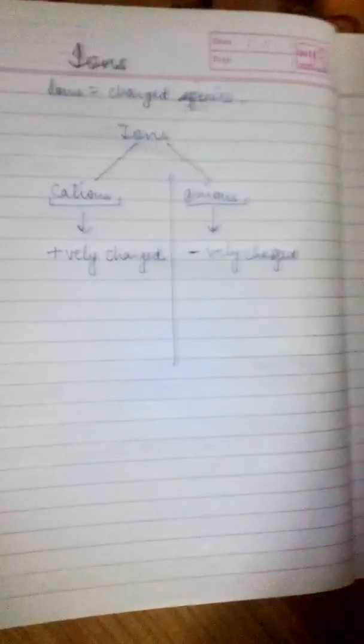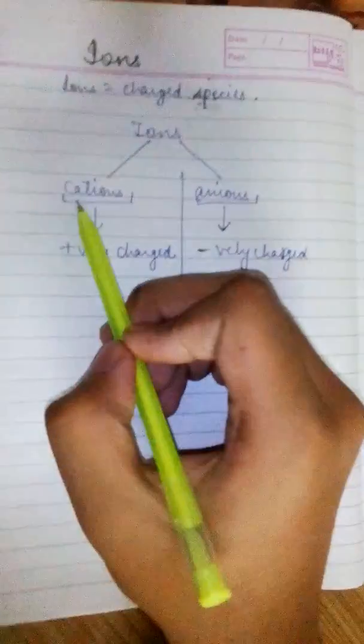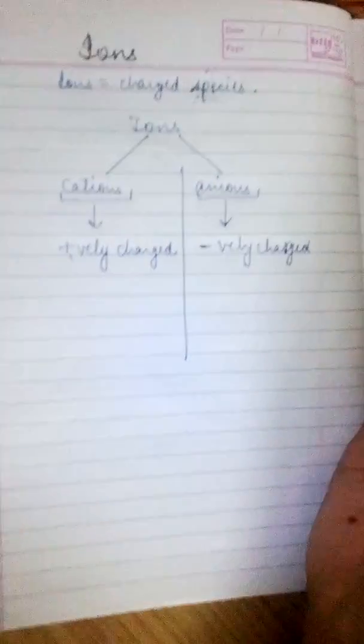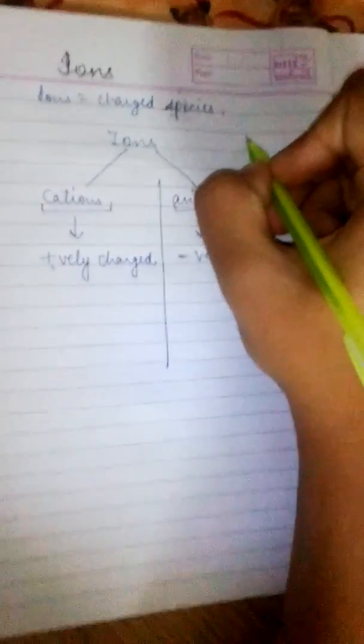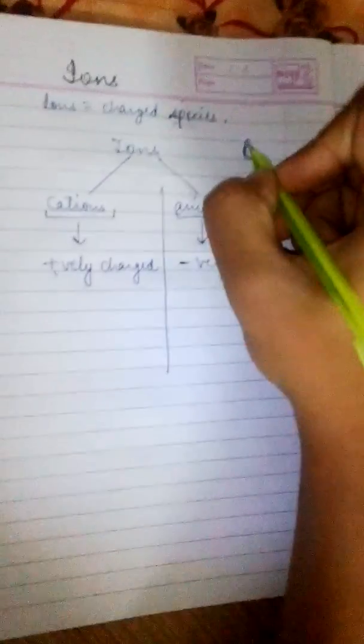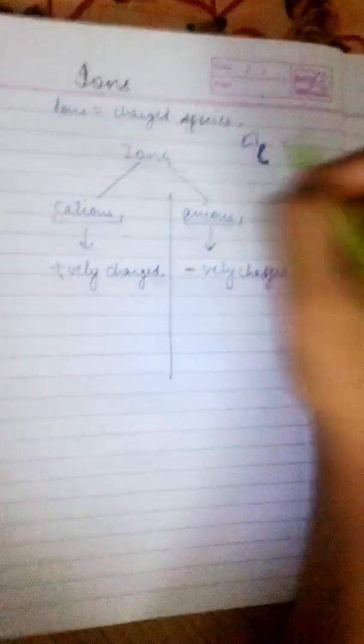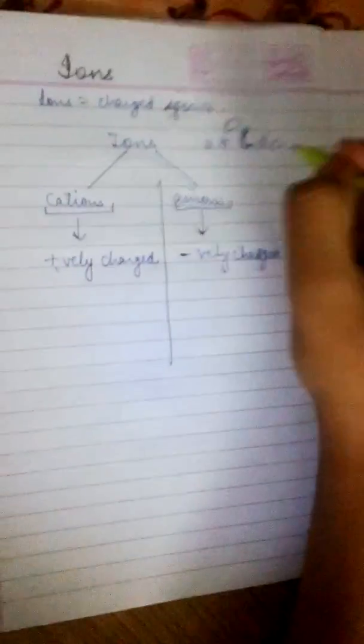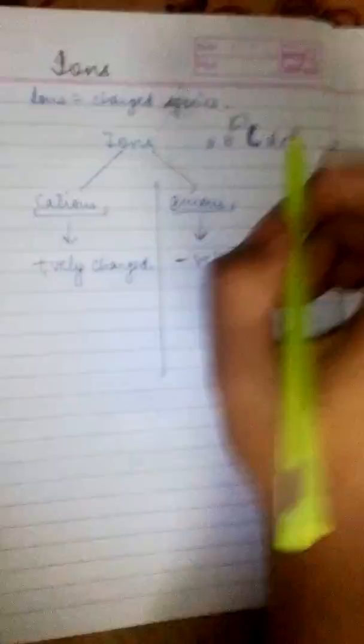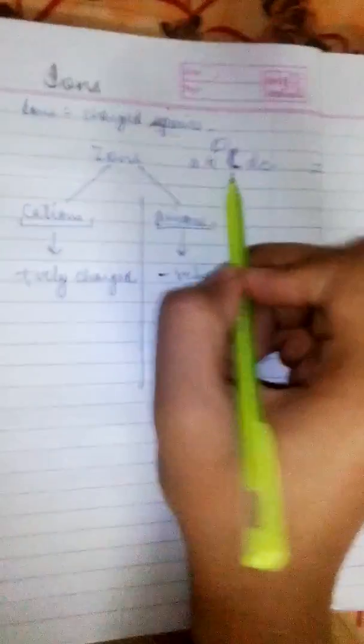I know almost some of you would be having a problem in learning how a cation is charged and how anions are charged. So, for this, let us take an example. From C, we can move backwards in A, B, C, D, E and so on till Z. We can move backwards from C.